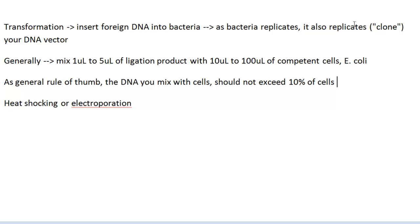So what that means is that if we're going to use 5 microliters of ligation product, you don't want to use anything less than 50 microliters of cells—if anything, you want to use more. So at 1 microliter, the minimum amount of cells you want to use is 10 microliters. So that's kind of a general rule of thumb.